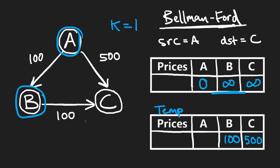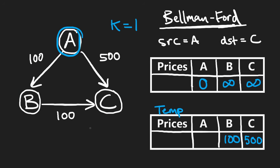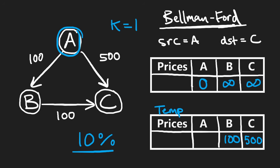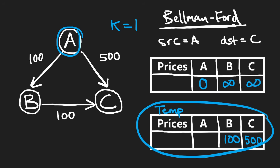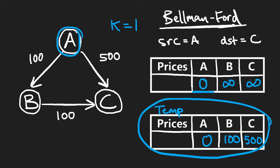You might ask why iterate through all edges rather than doing a proper BFS? The time complexity doesn't actually change, and doing it this way is much easier to code. The code will be surprisingly short. Since overall complexity is the same, simplicity is much better than a slight improvement in performance. Once we finish updating the temp array, we copy those values back into prices and then do the next iteration.